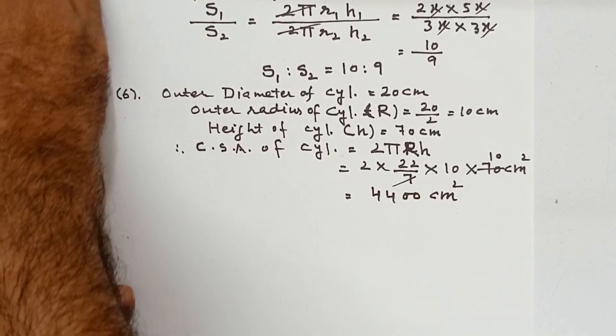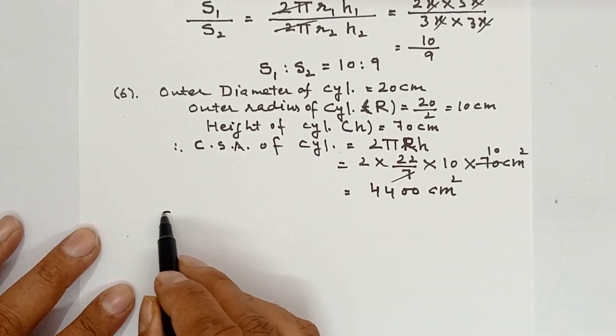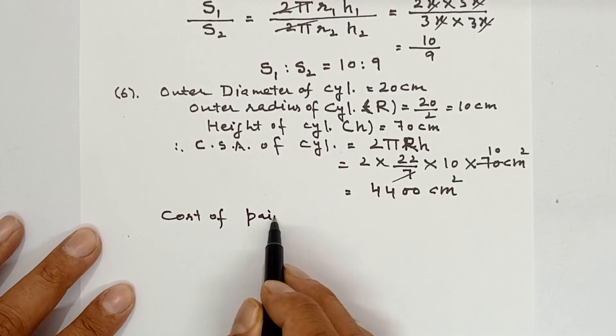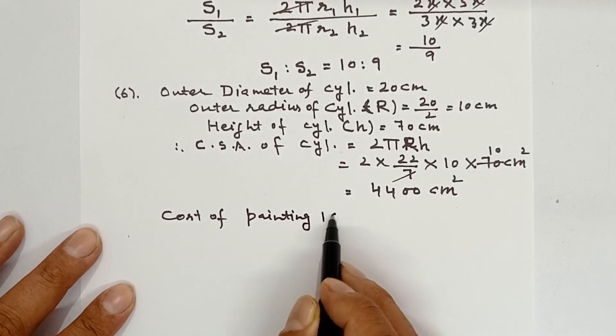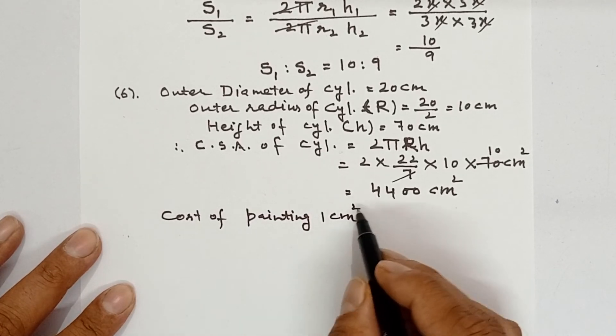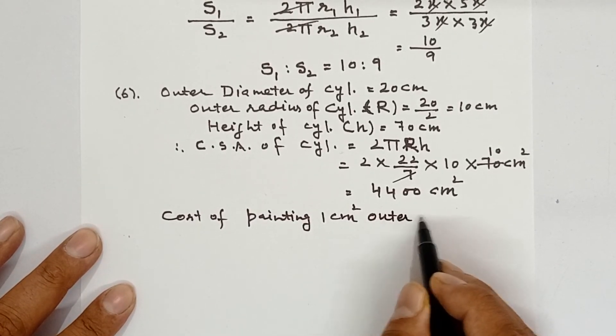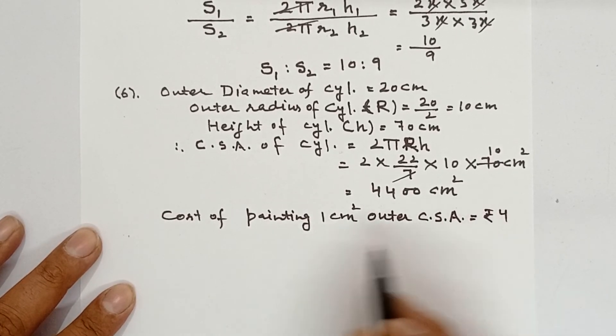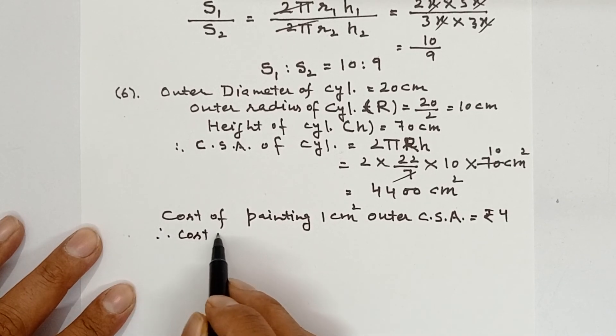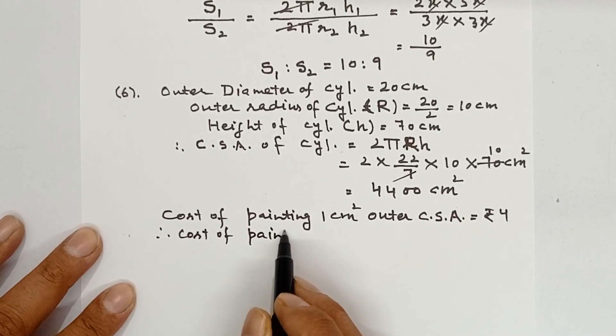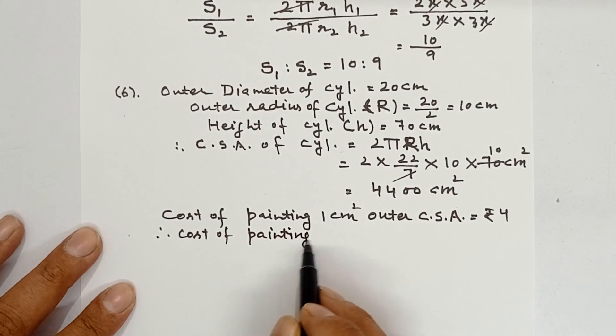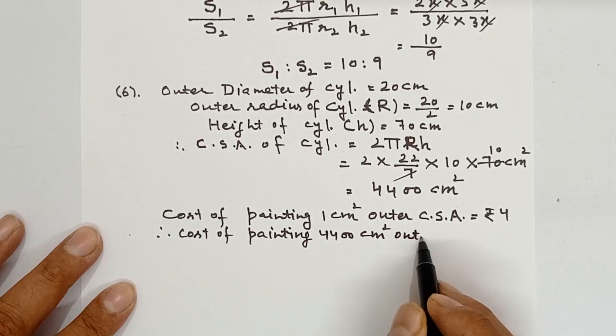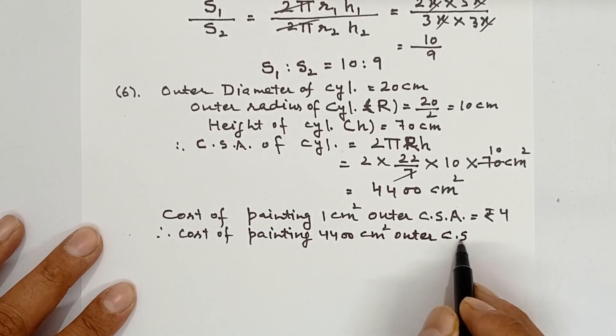Now what we need to find out, we need to find the total cost of painting. He has given cost of painting 1 cm square outer curved surface area, which is Rs 4. Therefore, cost of painting 4400 cm square outer curved surface area.